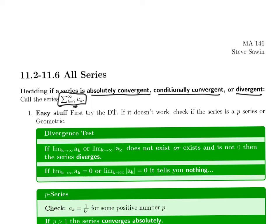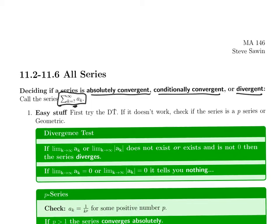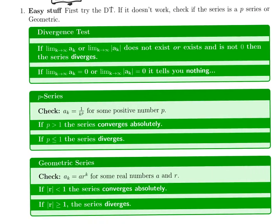The first thing you want to do when you're looking at a series is try the easy stuff. So there are three kind of easy possibilities: the divergence test, or it could be a p-series or a geometric series. The divergence test, all you do is take the limit as k goes to infinity of the terms, the things inside the sum.